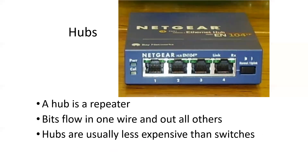Hubs are repeaters — a little box that's an easy way to plug things together at home. You have a bunch of things connecting together; you can plug them into a hub. Any bit that comes in goes out the other side. Because they are the simplest of boxes, they are the cheapest.